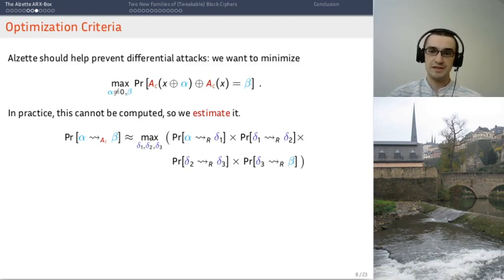In practice, since ALZET operates on 64 bits, we cannot compute this quantity. Instead, we are going to estimate it. And we are going to do it again in a way which is very standard in symmetric crypto, which is that we're going to look at the best differential trail. So that's a sequence of differences that will lead from alpha to beta.